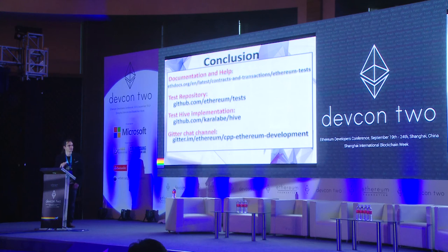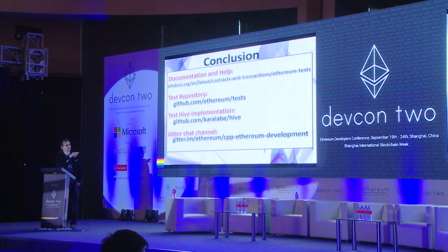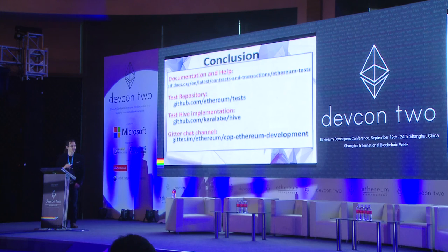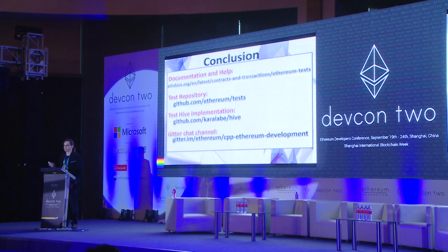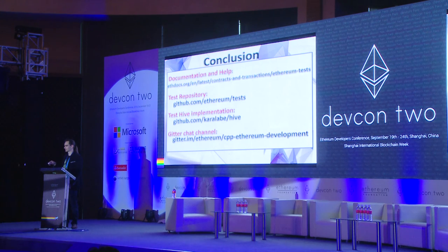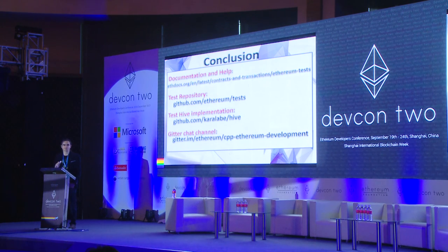We have documentation and help created by Bob Somerville on the Ethereum documentation site, with a link for the tests. We have a test repository containing thousands of tests in JSON files. Recently we also started a new project called Hive, in which you provide your client executable and a bash script to run inside Hive. Hive acts as the test framework that executes different kinds of tests on your client — all you need to do is provide your client setup or deployment script and the RPC IP for your client. We also have a Gitter channel where you can ask questions about development and testing.